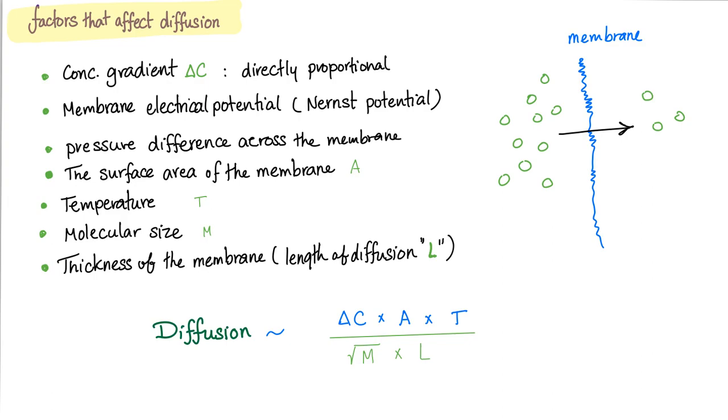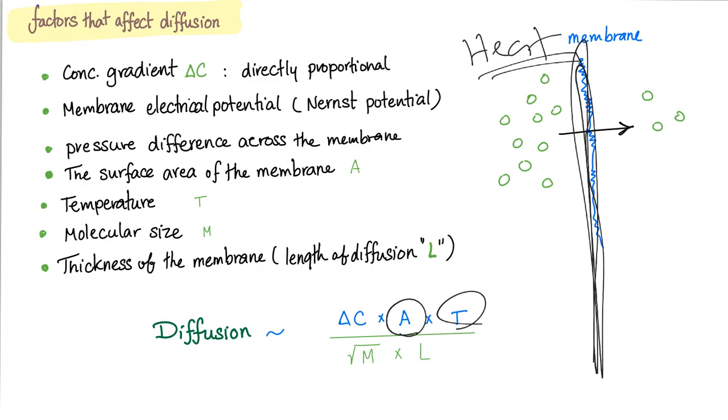What are the factors affecting diffusion? Concentration gradient - diffusion is directly proportional to concentration gradient. Membrane electrical potential. Pressure difference across the membrane. The surface area of the membrane - the larger the surface area, the greater the diffusion. Temperature - direct correlation. If you heat it, diffusion increases. Molecular size - inversely related to the square root of molecular size. Length of diffusion is the same as membrane thickness. If your membrane is thick, diffusion decreases.